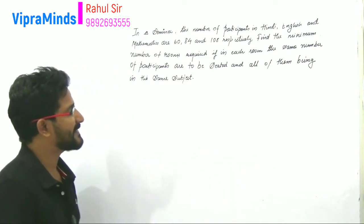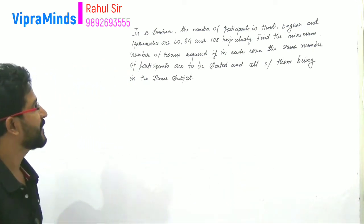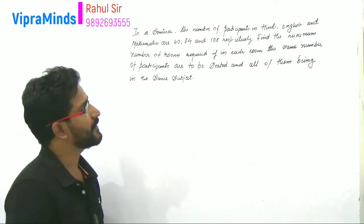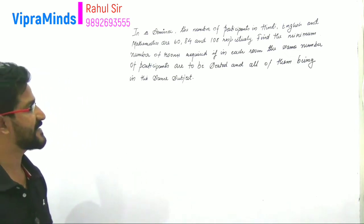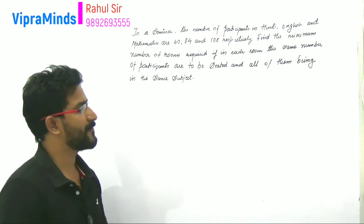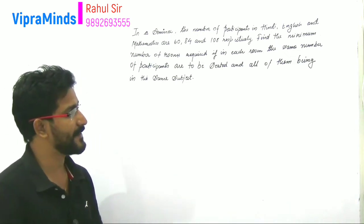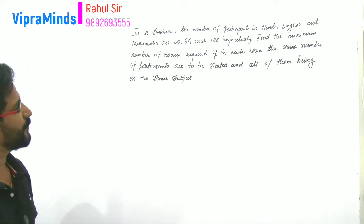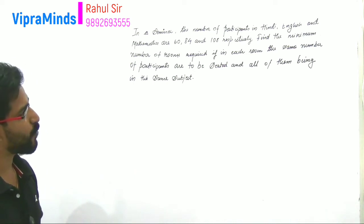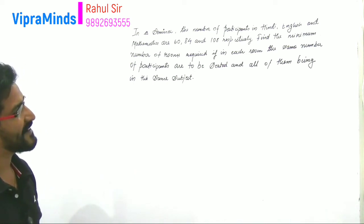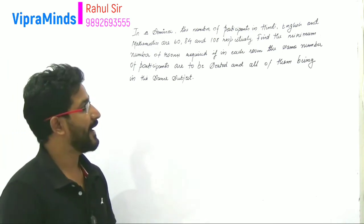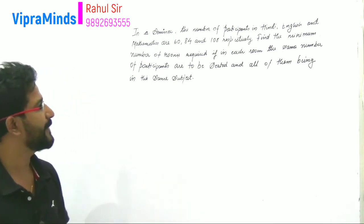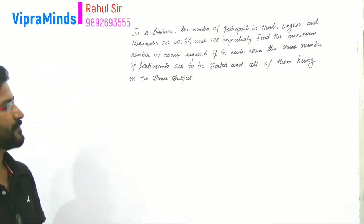Let's start with the example: In a seminar, the number of participants in Hindi, English, and Mathematics are 60, 84, and 108 respectively. Find the minimum number of rooms required if in each room the same number of participants are to be seated and all of them being in the same subject.